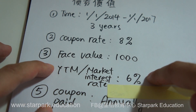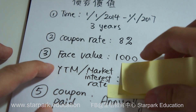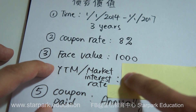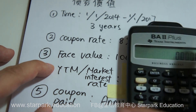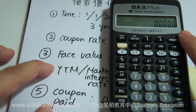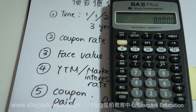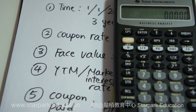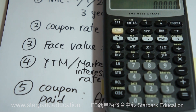We need to calculate the yield to maturity — how to get back the 6%. The 6% is now unknown and needs to be found. In order to find the answer, there is no other method but to use the financial calculators, as shown on the screen.